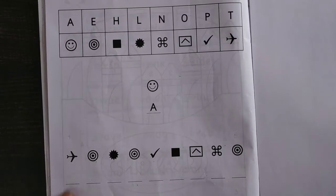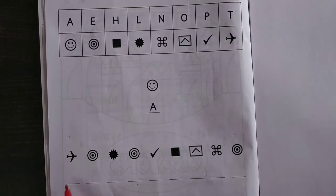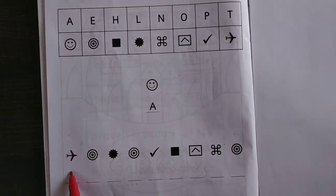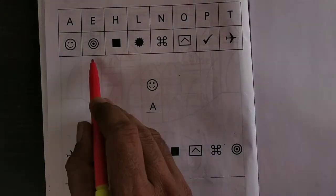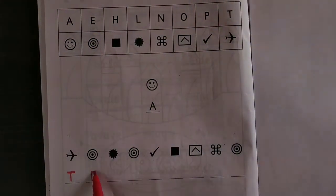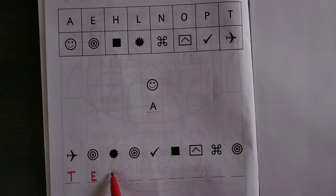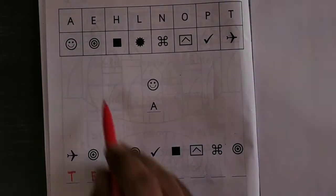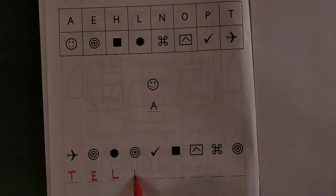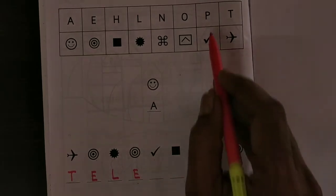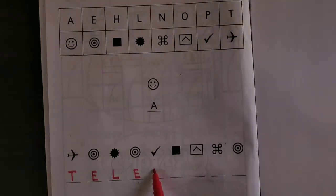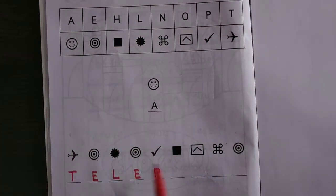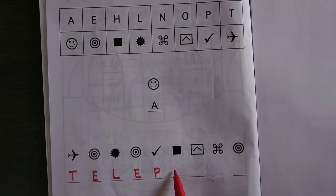This picture is given, so what will come here? T will come, E will come, L will come, E will come, P will come, and H you have to write here.